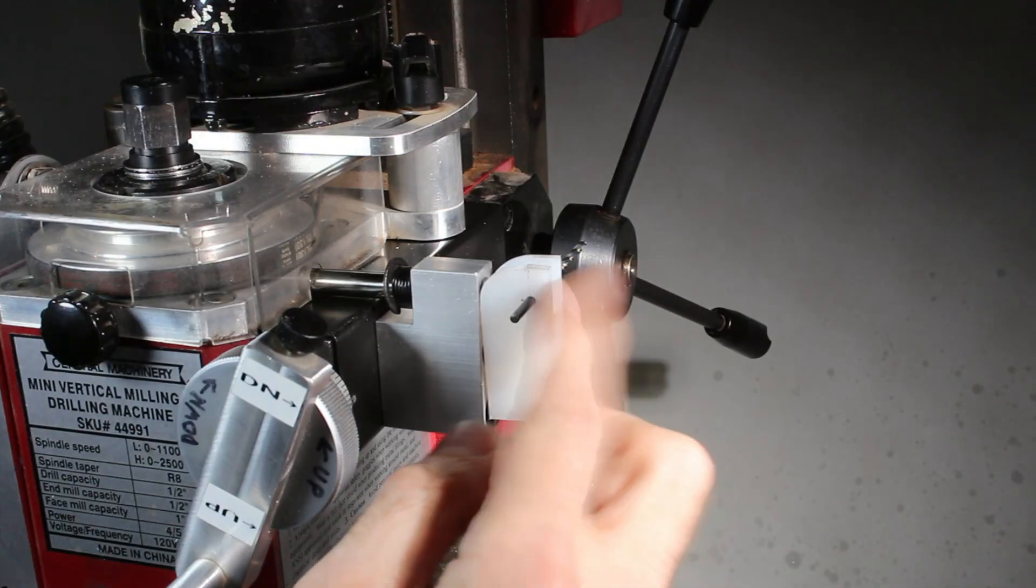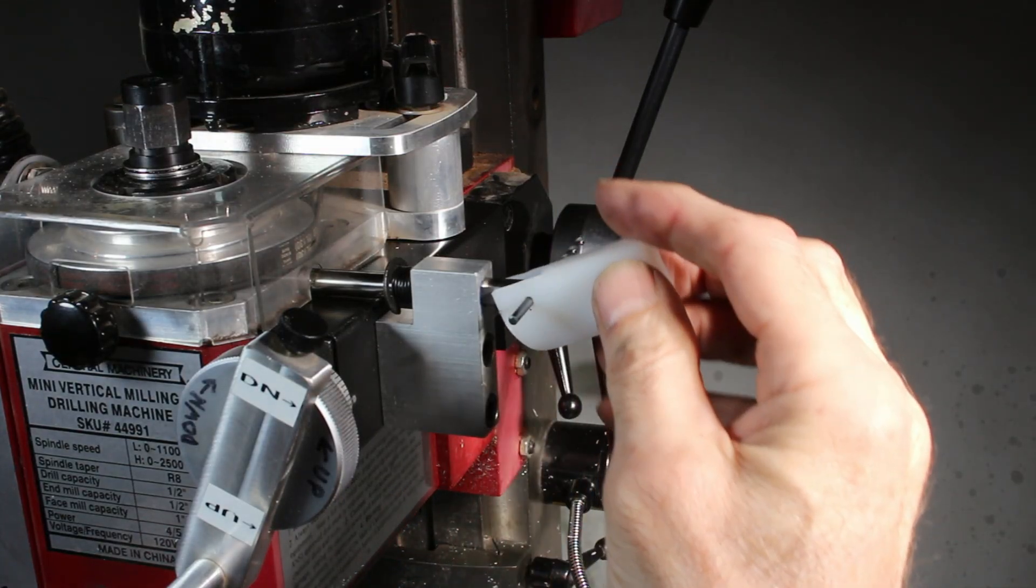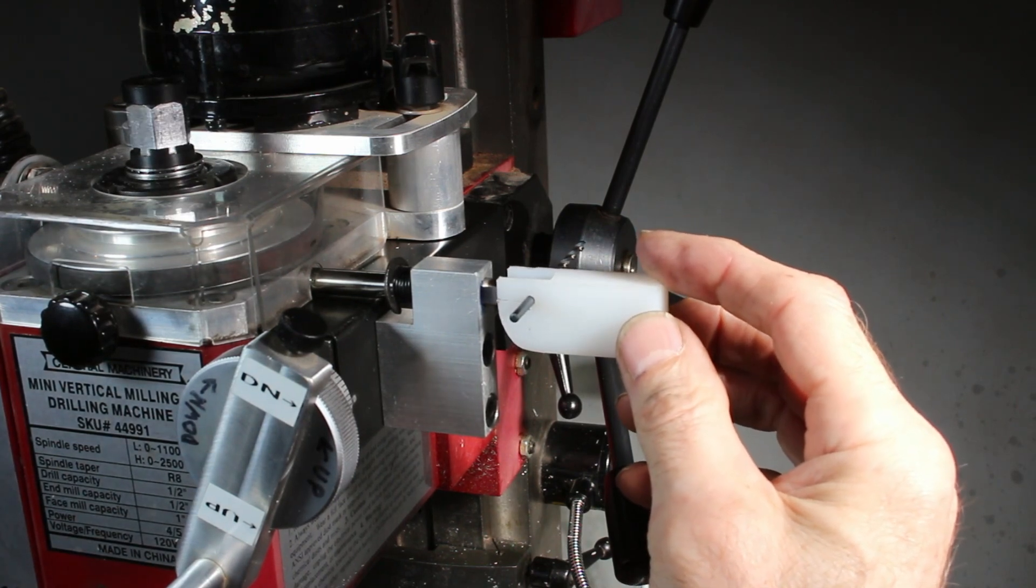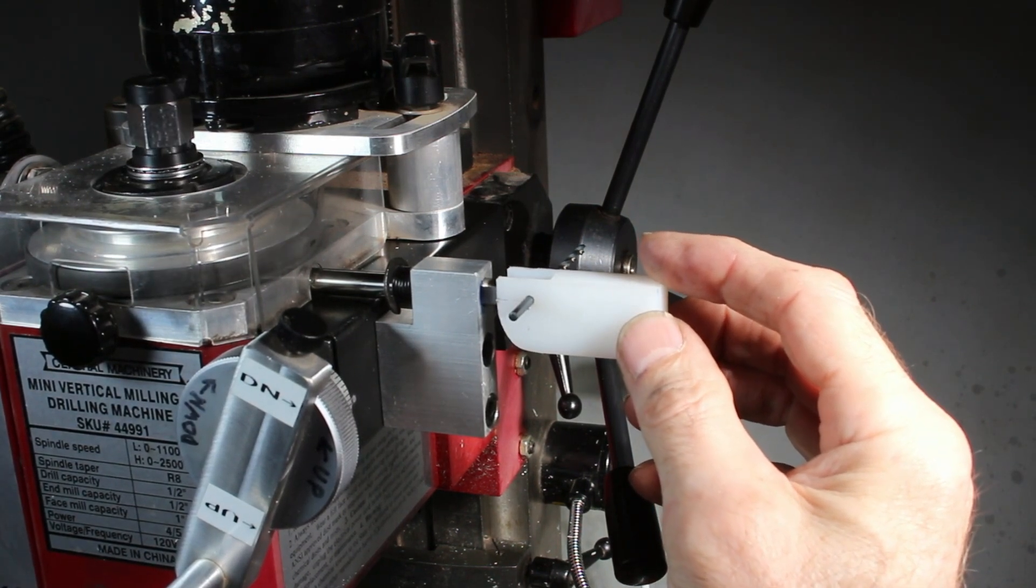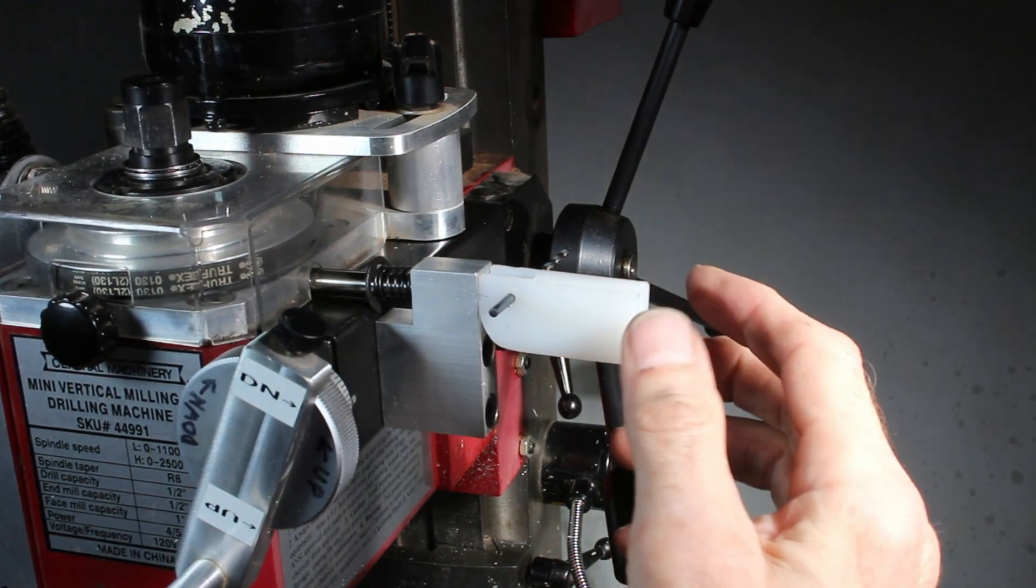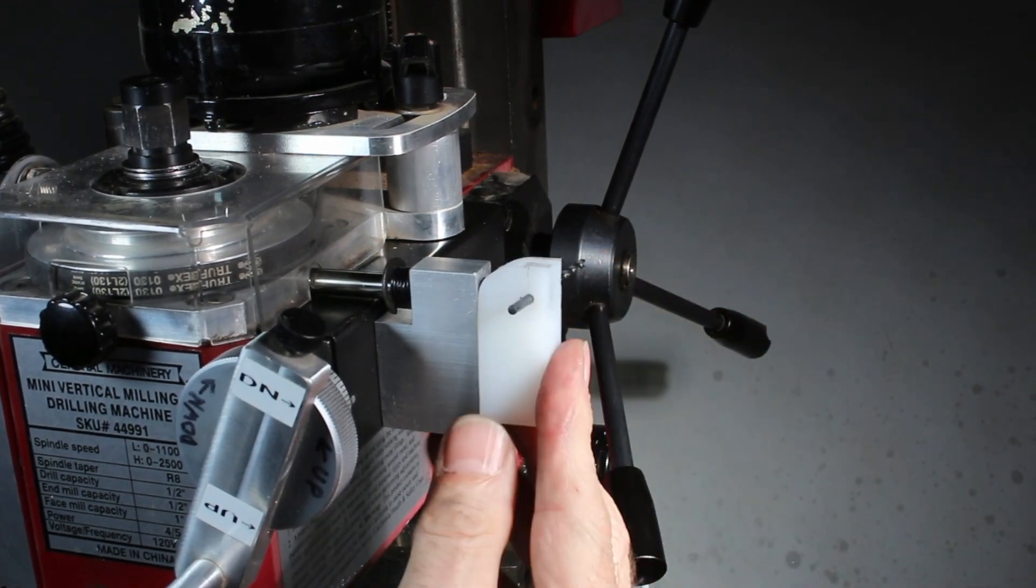So I've got a drill bit in here. And as you can see, if I pivot this up like that and rotate the quill, eventually it will just go boom. So that's locked. And then I can just release it like that.